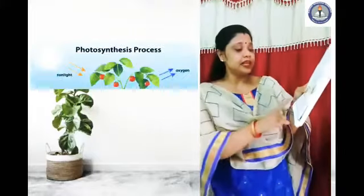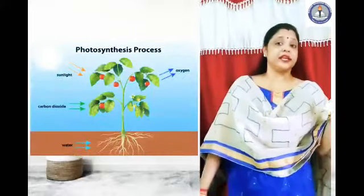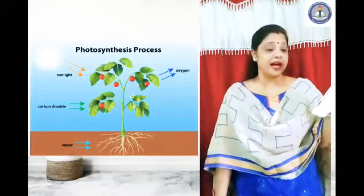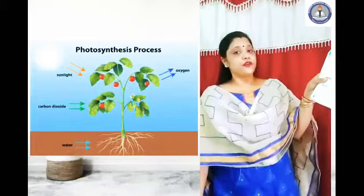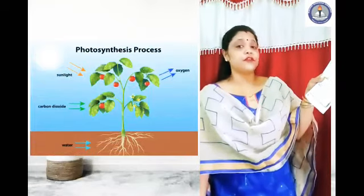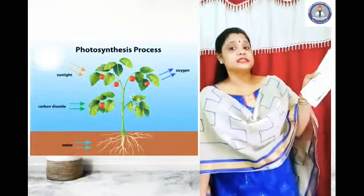The pigment chlorophyll gives leaves their green color. The leaves are the food factory of the plant. They produce food by the process of photosynthesis.